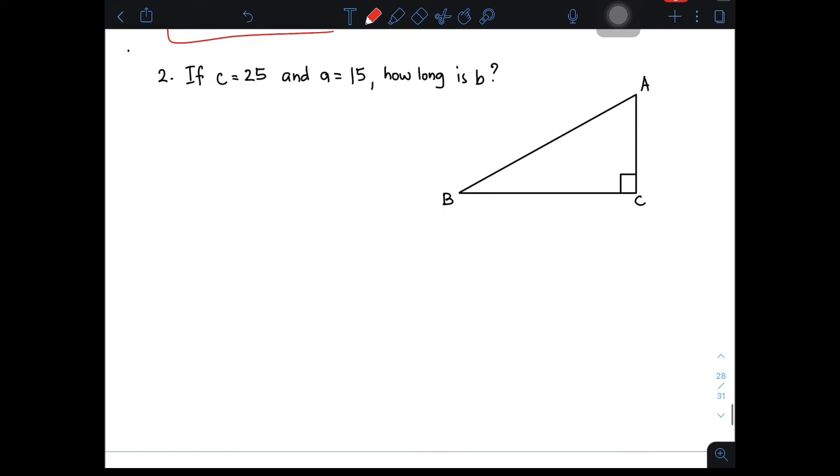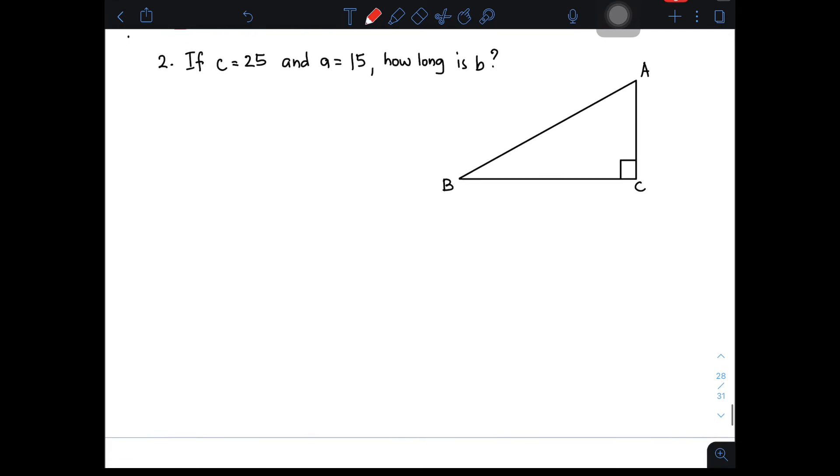Now, let's move on with the next example. We have your item number 2. Given this right triangle, if C is equal to 25, this is your C, which is 25, and your A is equal to 15, how long is side B? Kaya na daw kahaba si side B. So, using the formula, C squared is equal to A squared plus B squared. All you need to do is to substitute the value of A and value of C in our formula.